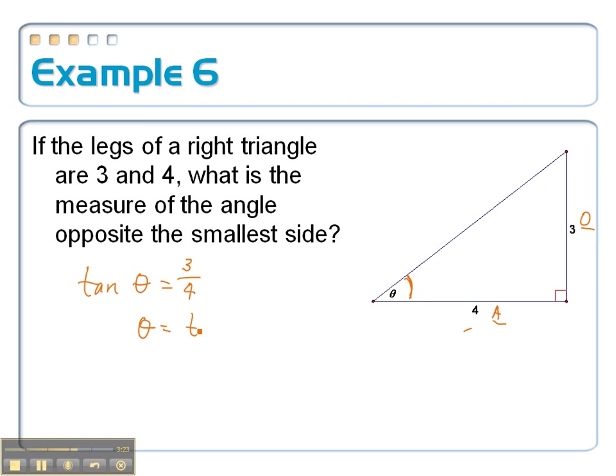it's equal to the inverse tangent of 3 over 4. Putting that into the calculator, inverse tangent of 3 over 4, we get about 36.9 degrees.